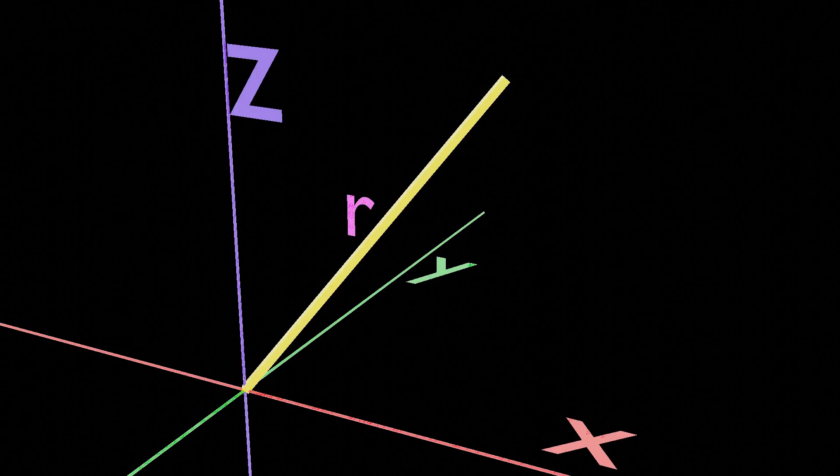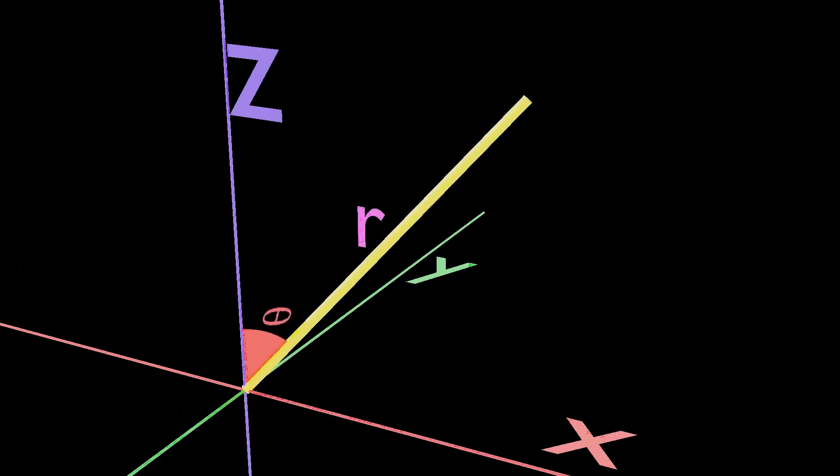The second parameter is the angle between the z-axis and the vector from the origin to the point. It takes the symbol theta and ranges from 0 to 180 degrees.